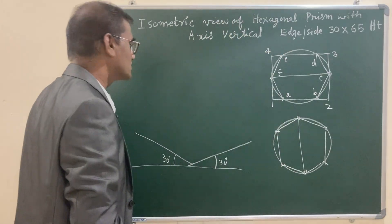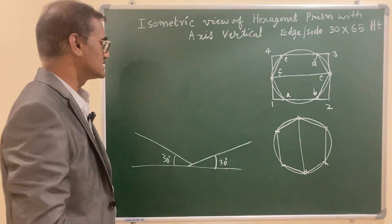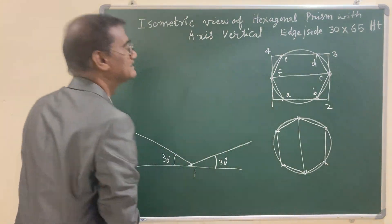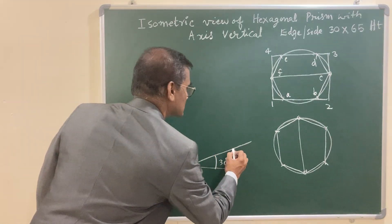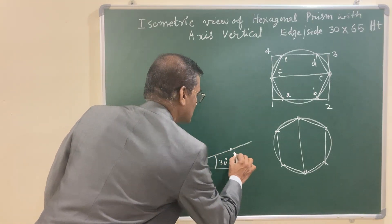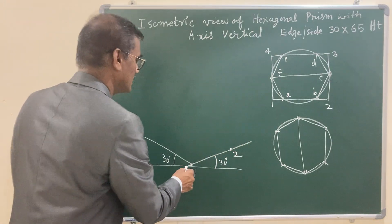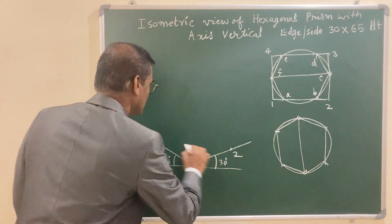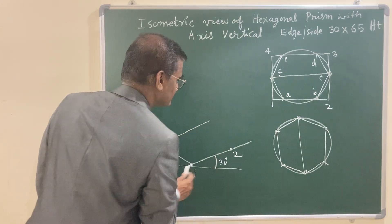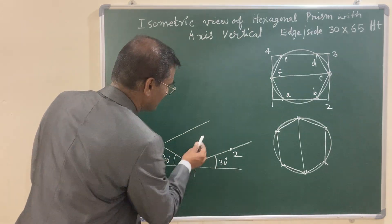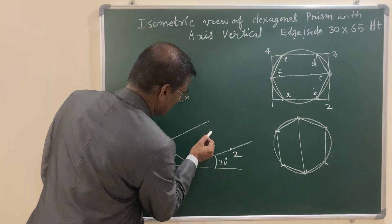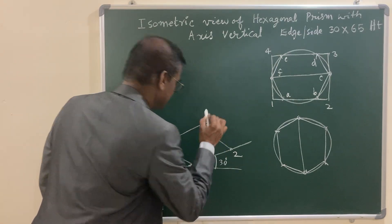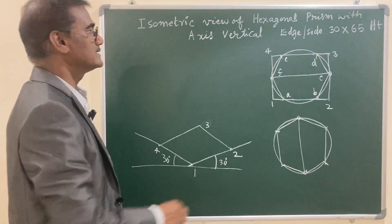Draw the parallelogram for points one, two, three, four. Point one is your reference. Using a compass, mark point two to the right and point four to the left. Draw lines parallel to the 30-degree line on both sides and complete the parallelogram to get point three. This forms the isometric rectangle representing the top view boundary.